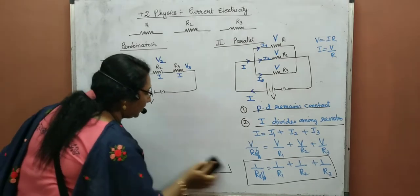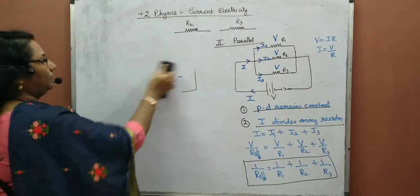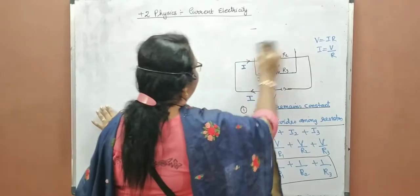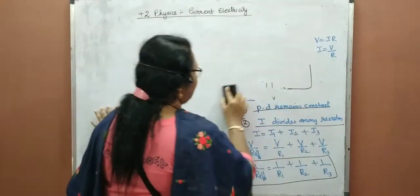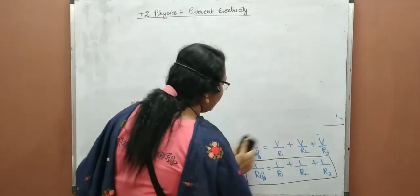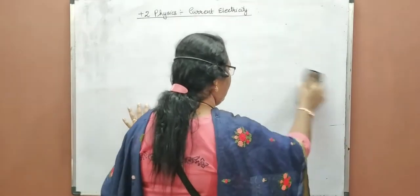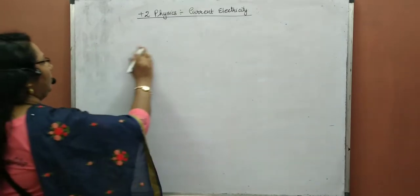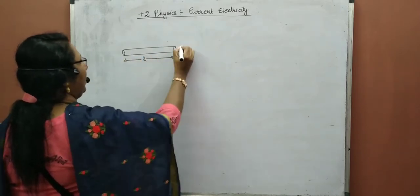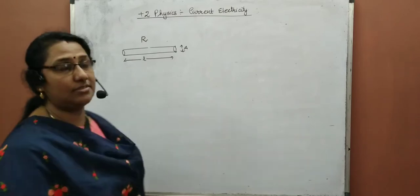We have completed the combination of resistors. Now we are going to take a metallic wire. The given wire has a length L and its area of cross section is A. We have taken a metallic wire of length L, area of cross section A, and its resistance is given as R.